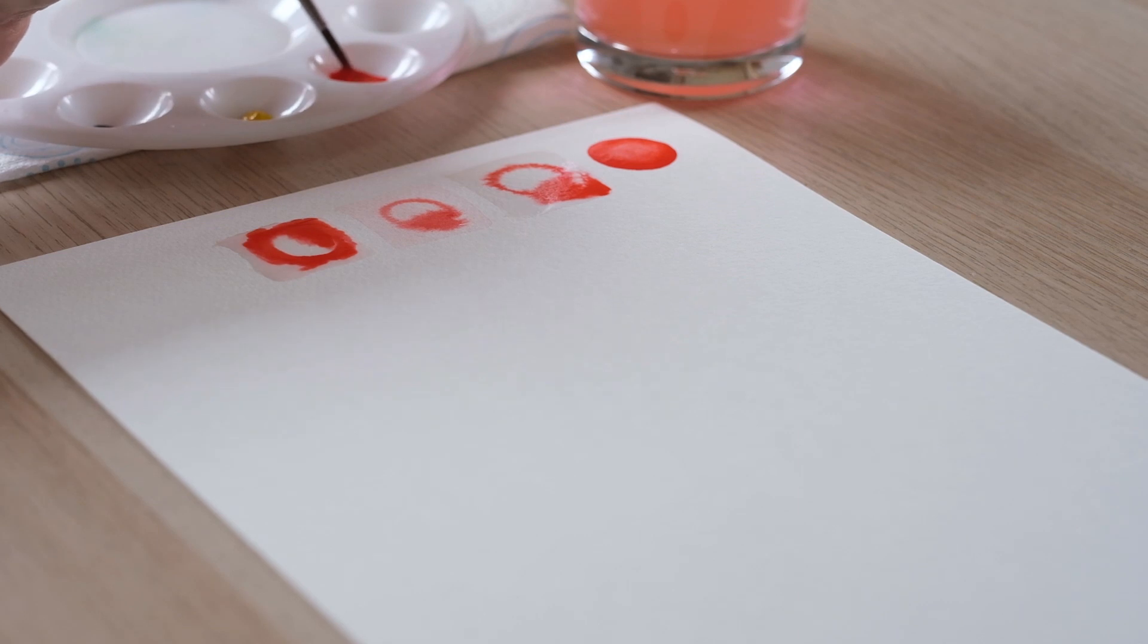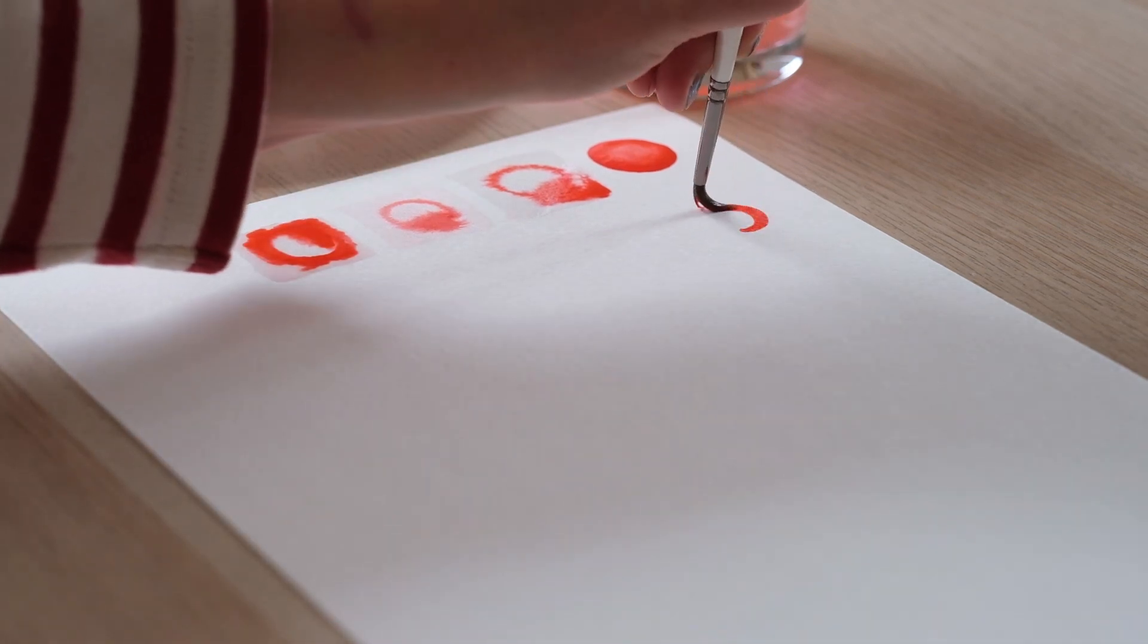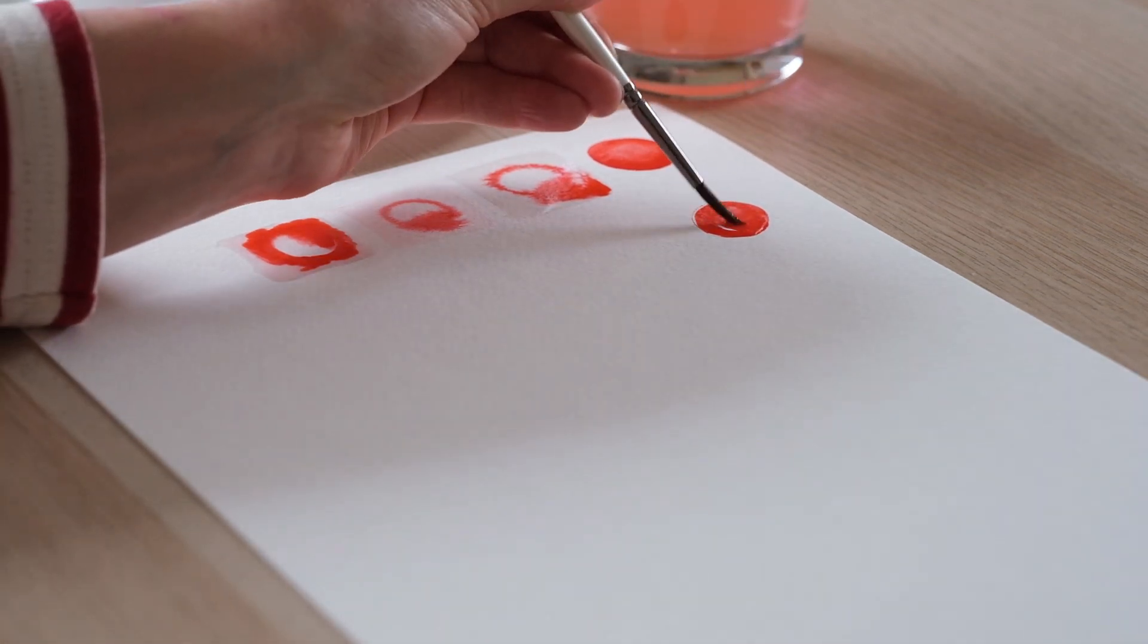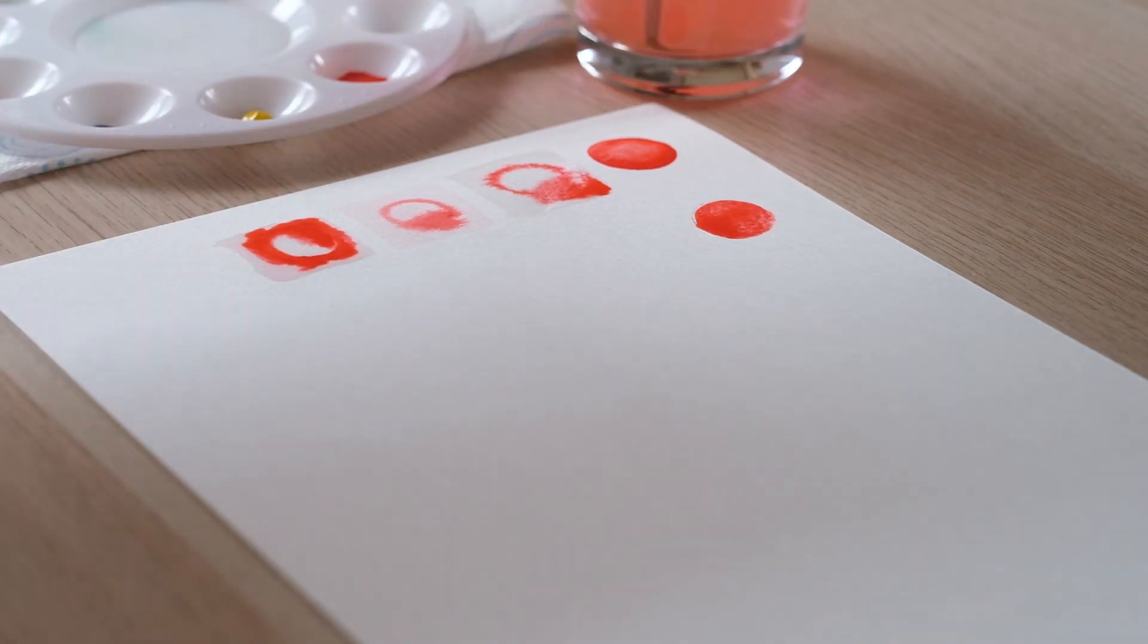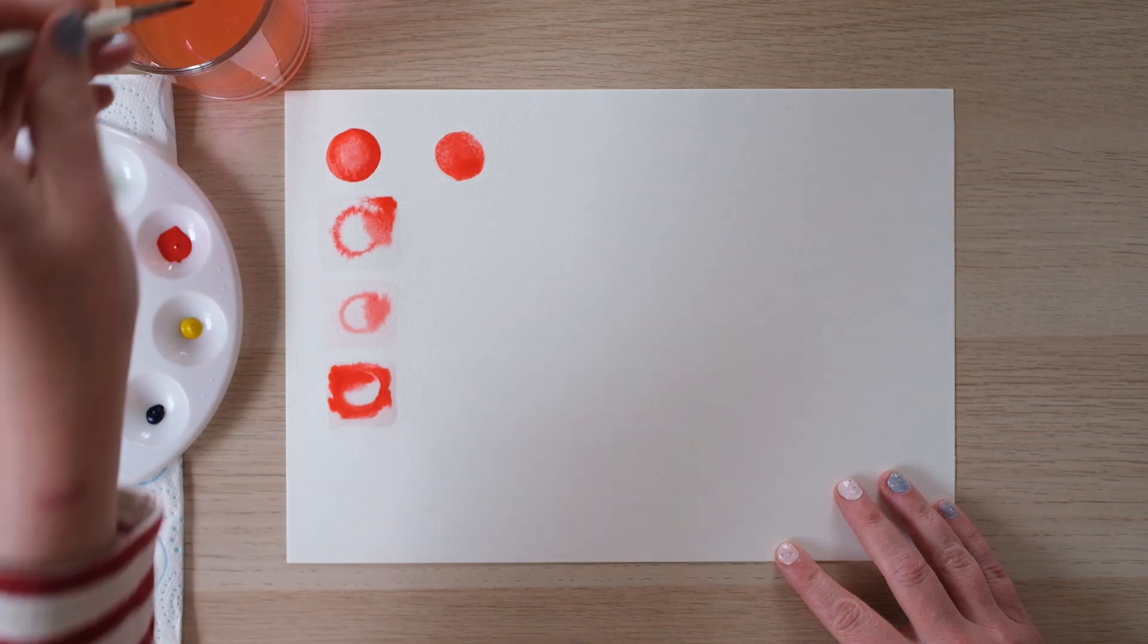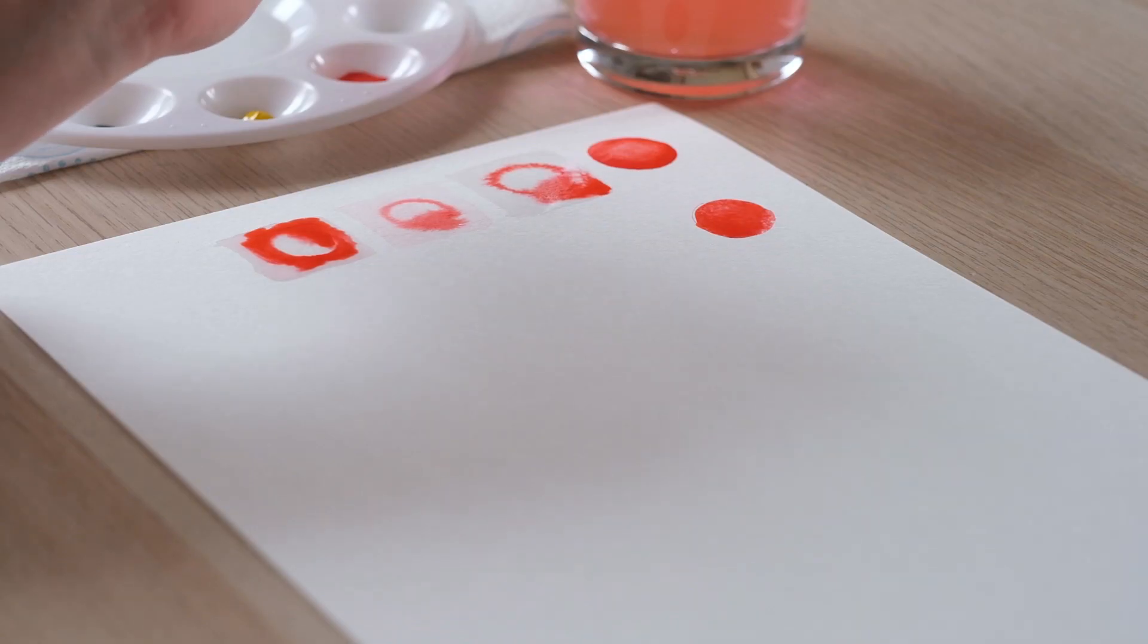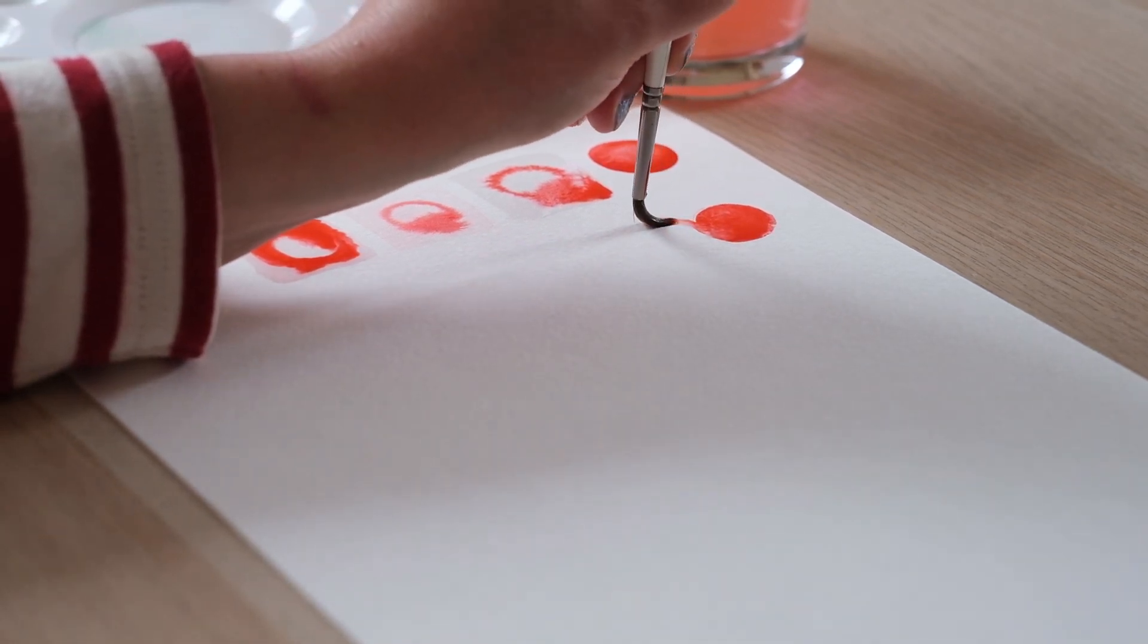I always get my brush nice and wet, whatever's happening we're going to paint another circle but this time we're going to fill it in straight away. Okay now clean that brush off 100% maybe even blot it on the side there and even with our slightly colourful water this exercise is going to be really interesting to see what happens when you stretch out that pigment.